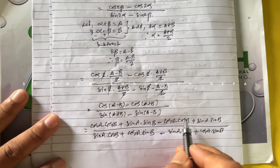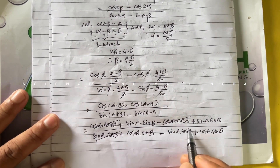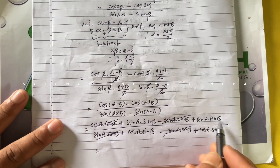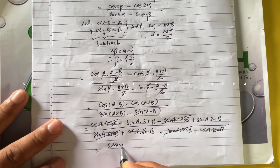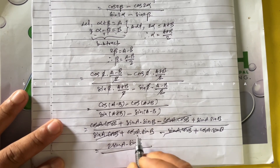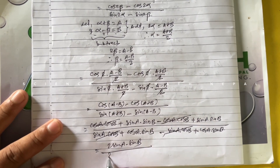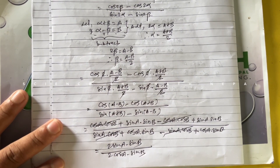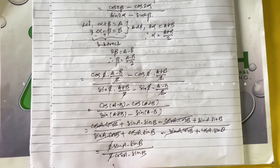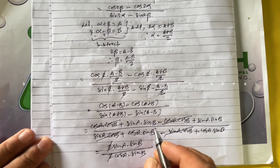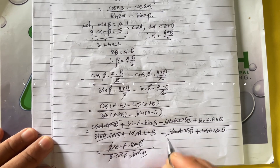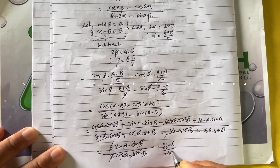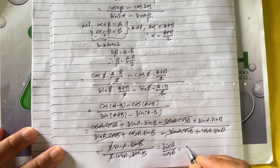In the numerator, the cosA cosB terms cancel, and in the denominator the sinA cosB terms cancel. The remaining numerator is 2sinA sinB, and the remaining denominator is 2cosA sinB. The 2's cancel, the sinB terms cancel, and we are left with sinA / cosA, which by the quotient relation equals tanA.